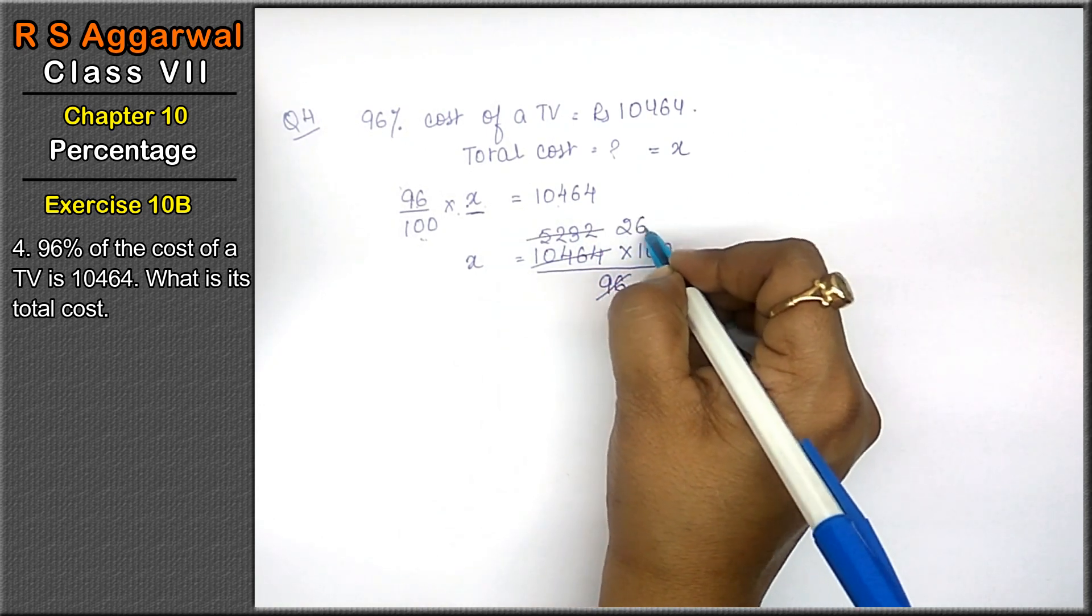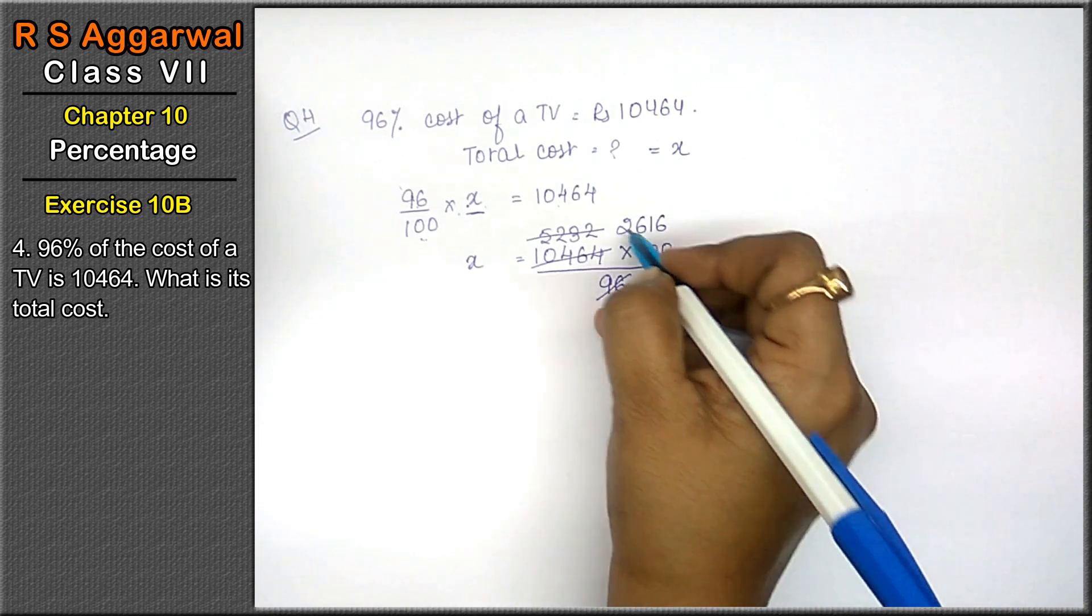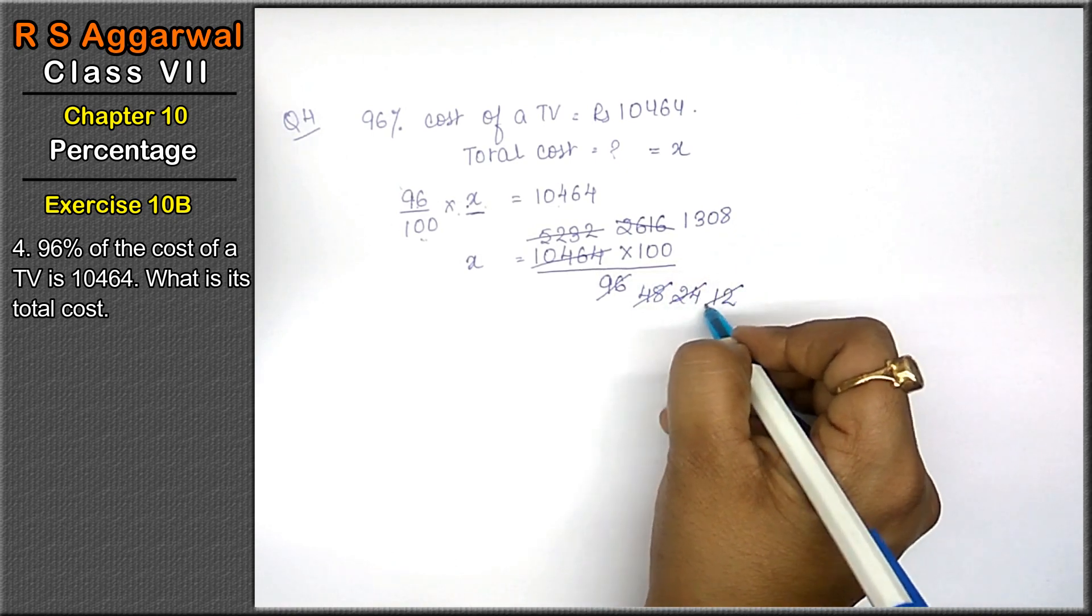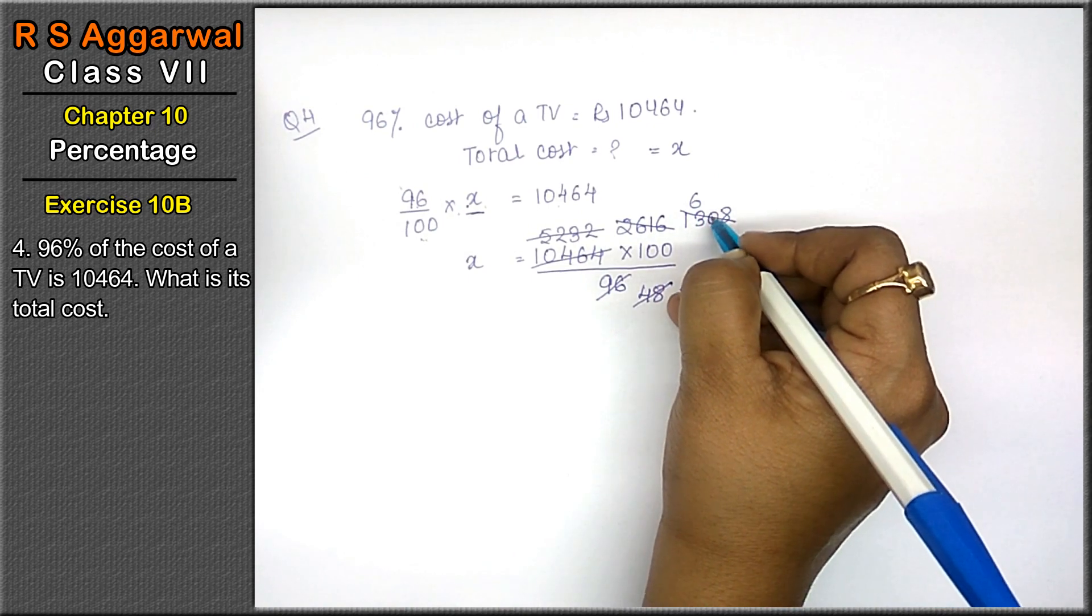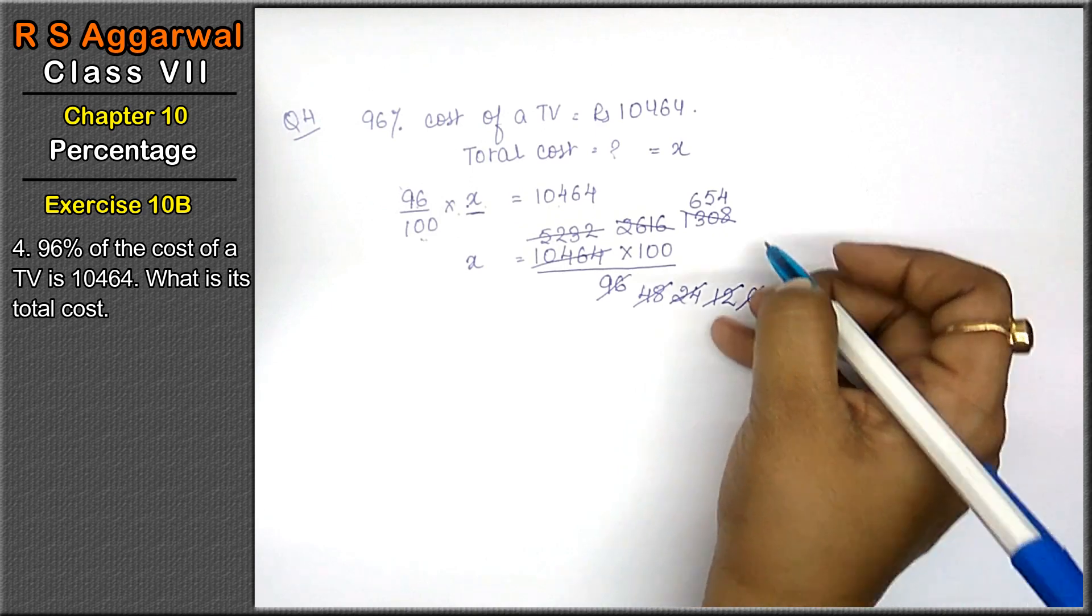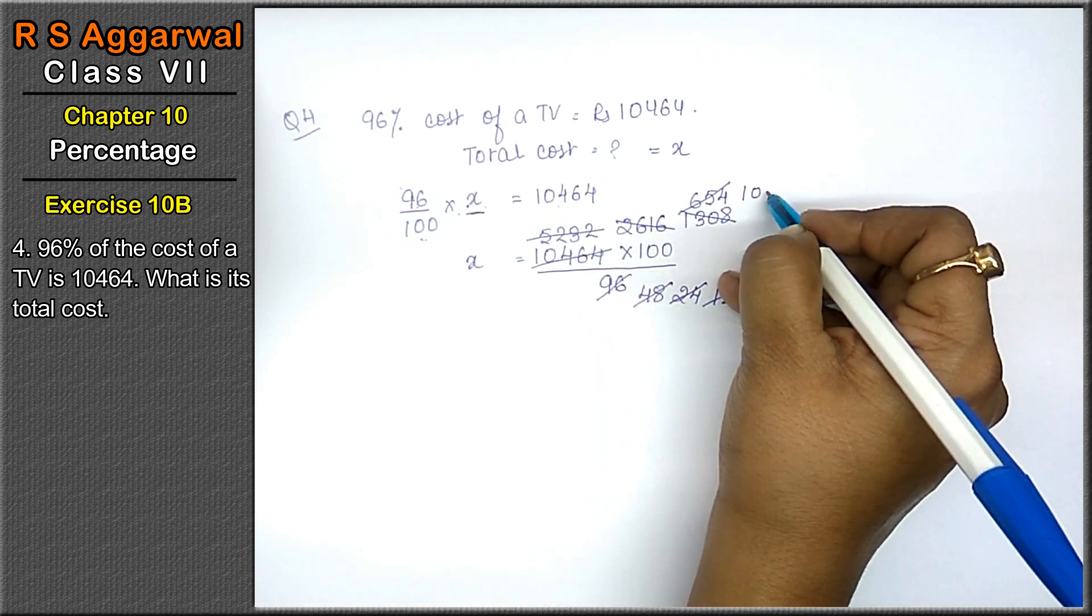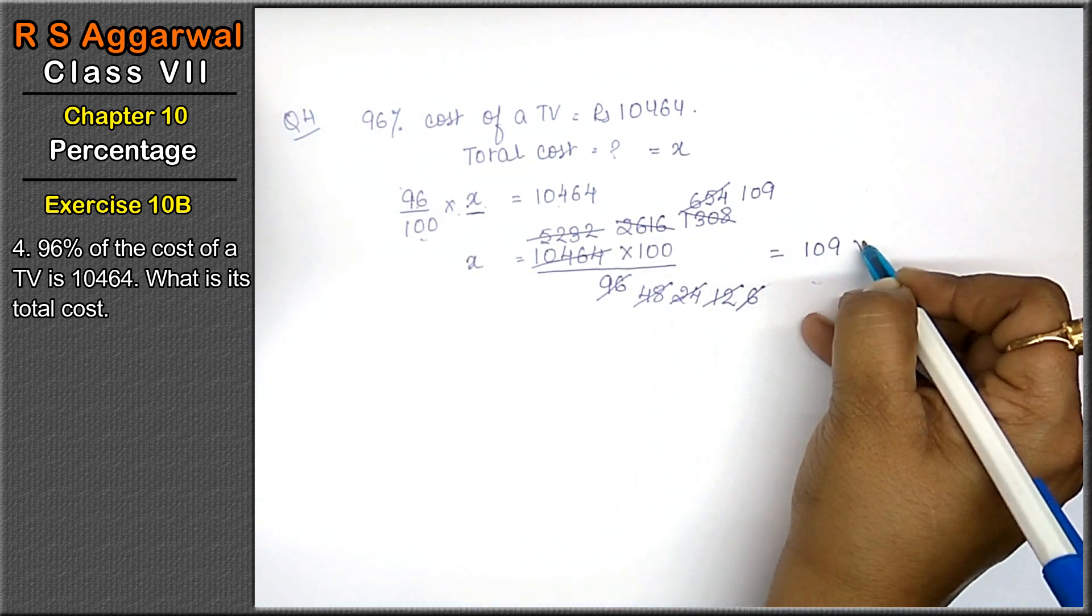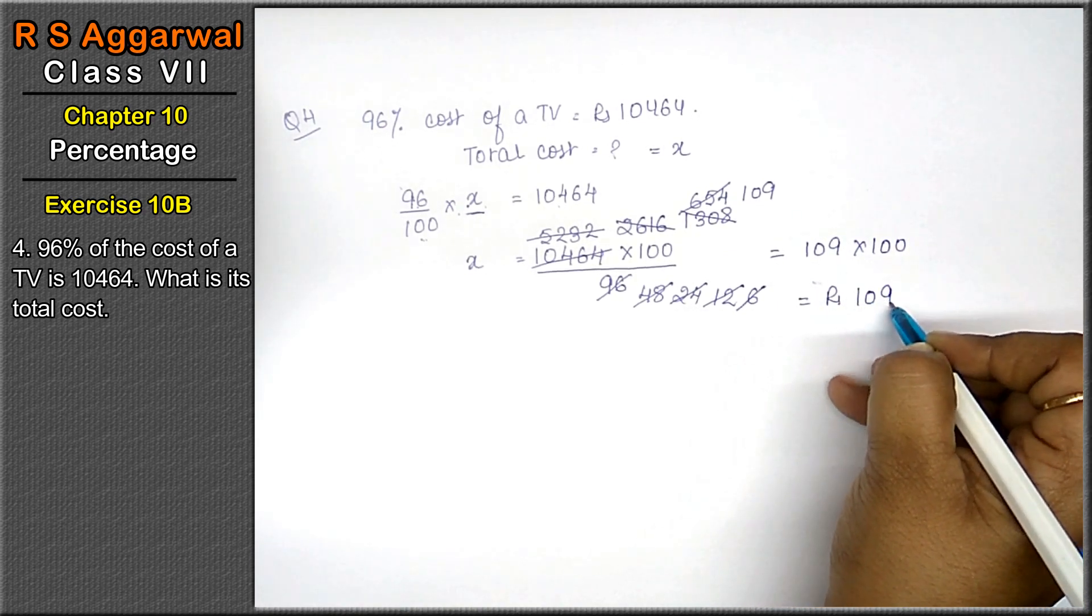2 times 1 is 2, 2 times 3 is 6. 2 times 2, 5 times are 10. 2 times 5 is 10, 2 times 4 is 8. Now 6 times 1 is 6, 6 times 1 is 6, 6 times 1 is 6, 4 times 4 is 6. Now the answer is 109 times 100. The answer is rupees 10,900.